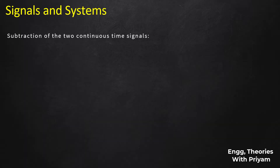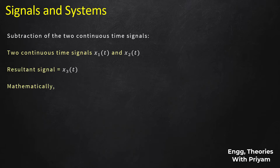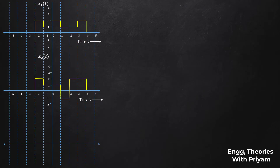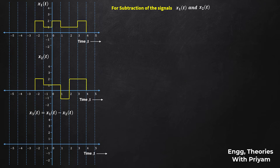Now let's see the subtraction of two continuous time signals. Again our two continuous time signals are x1(t) and x2(t). We subtract x2(t) from x1(t) to obtain the resultant signal x3(t), so mathematically x3(t) = x1(t) - x2(t). This subtraction must be done for every instant of time. We take both signals with amplitude on the y-axis and time t on the x-axis, and plot the resultant signal x3(t).